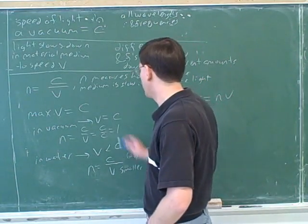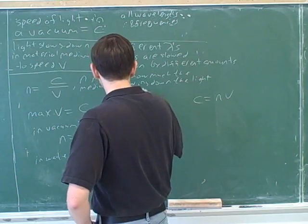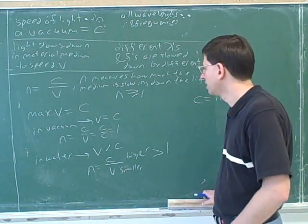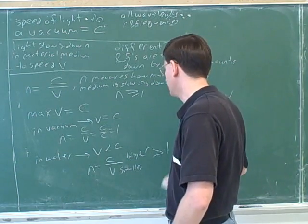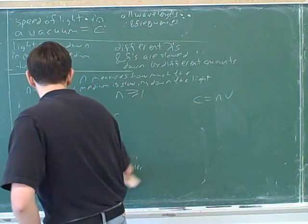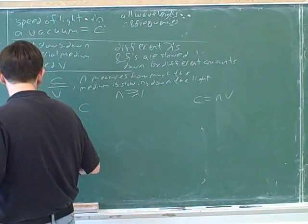So anyway, we've proven that N is always bigger than or equal to 1. Do you remember, what did we say was the speed of light in the air? No. What did we say was the index of refraction of air? One.